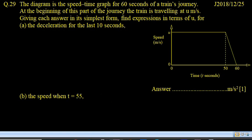So the last 10 seconds is here and it is retardation. So x is 50, the time is 50 and the speed is u. And after the 10th second, the time is 60 and the speed is 0.